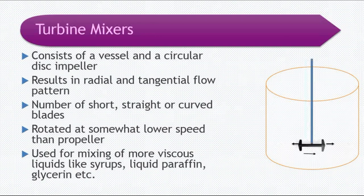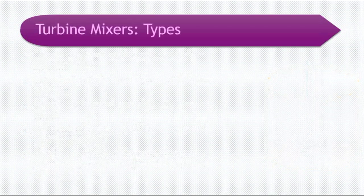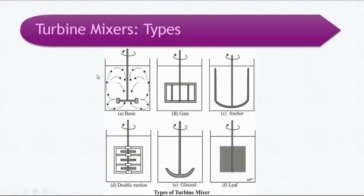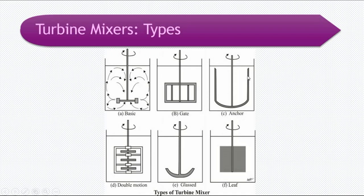Turbine mixers are mostly used for mixing viscous liquids like syrups, liquid paraffin, and glycerin — so if the mixture is viscous, you can use turbine mixers. There are different types of turbines: basic turbine, gate turbine, anchor turbine, double motion turbine, glass turbine, and lift turbine. These can be used for mixing different viscous liquids.